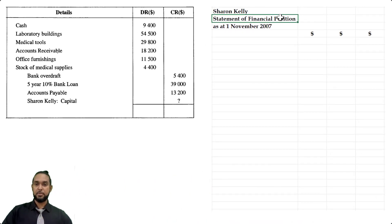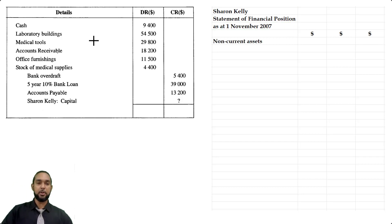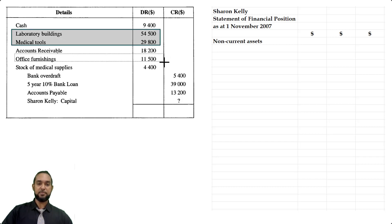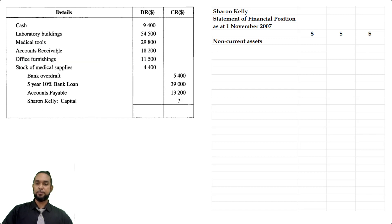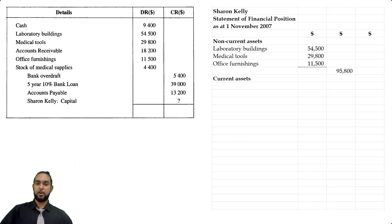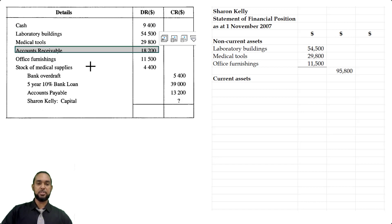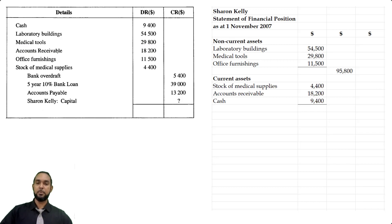Head up: Sharon Kelly, statement of financial position as of 1 November 2007. First up is non-current assets. I'm seeing laboratory buildings, medical tools, and office furnishings. Let's populate those items: laboratory buildings, medical tools, office furnishings — subtotal. Now current assets: we have cash, accounts receivable, and stock of medical supplies. Those three things go in our current assets section — stock, debtors, cash — in order of permanence.